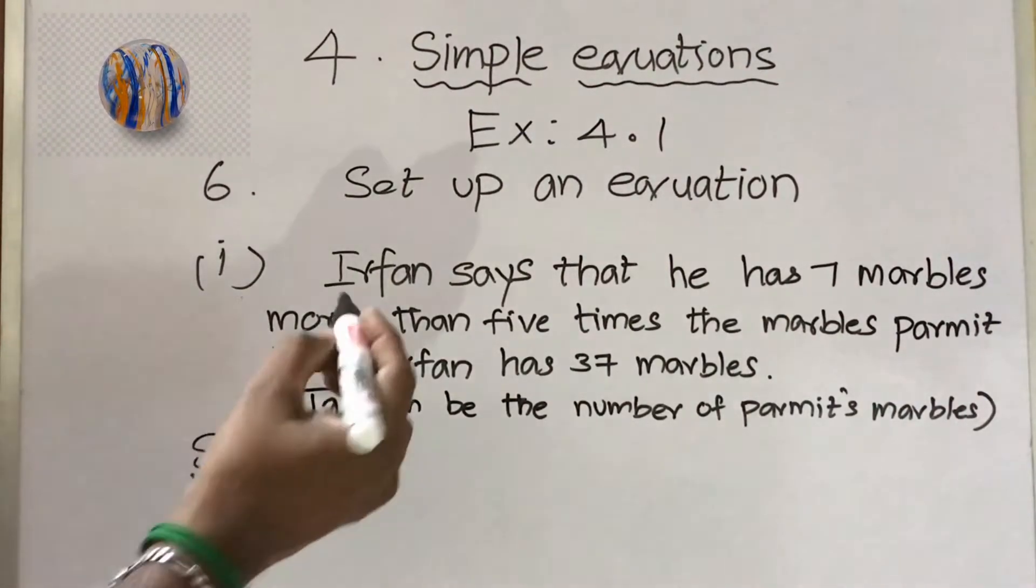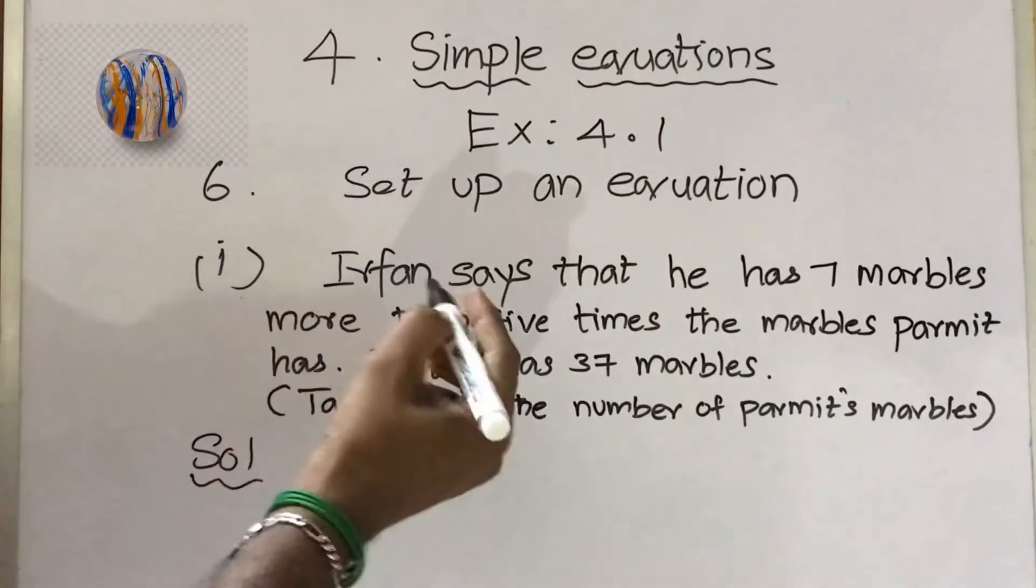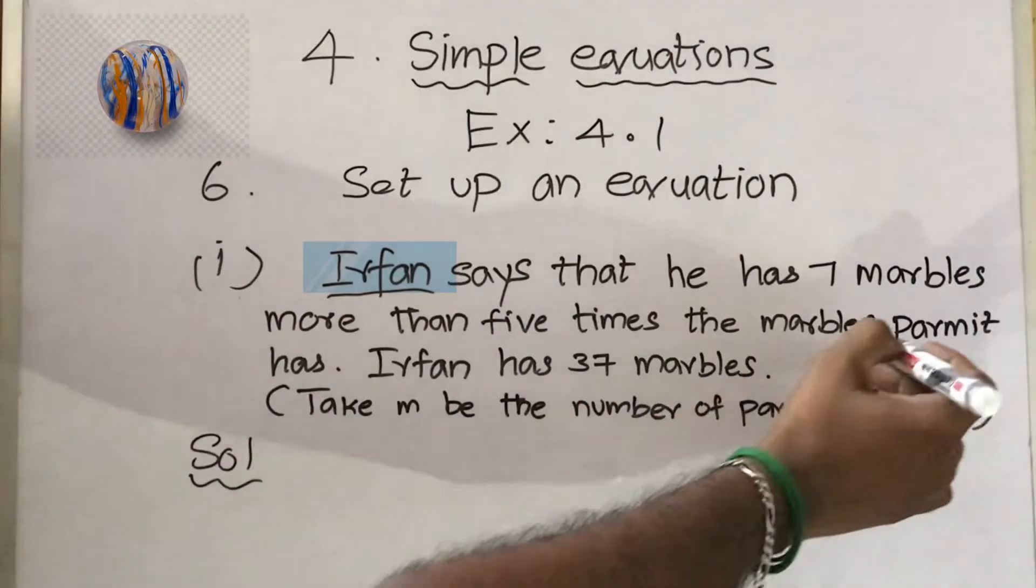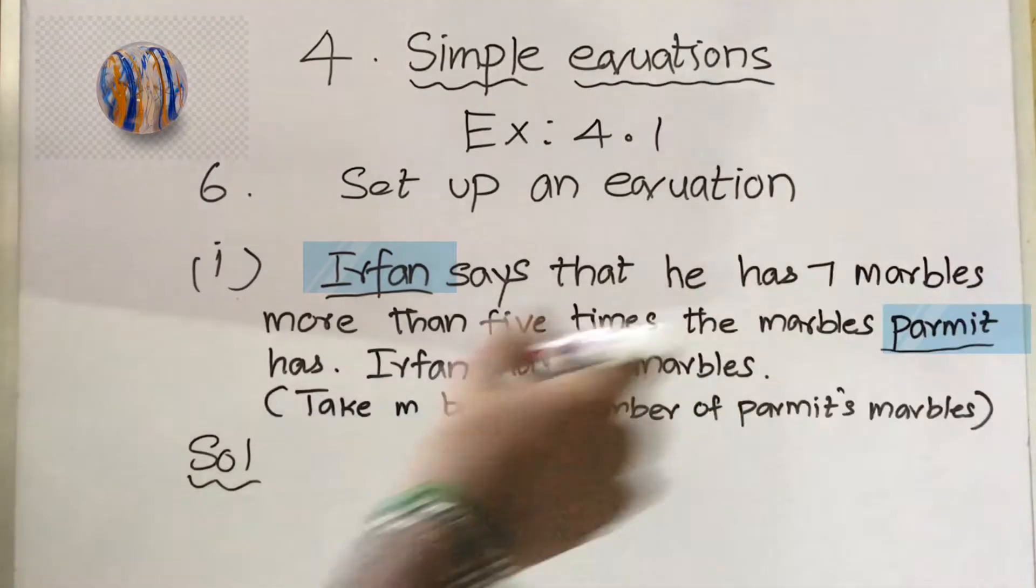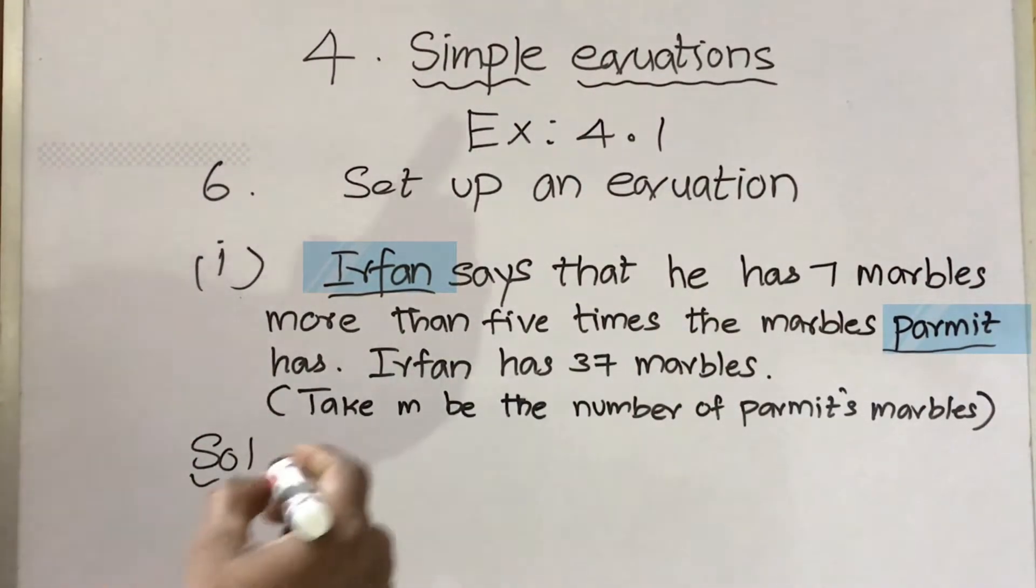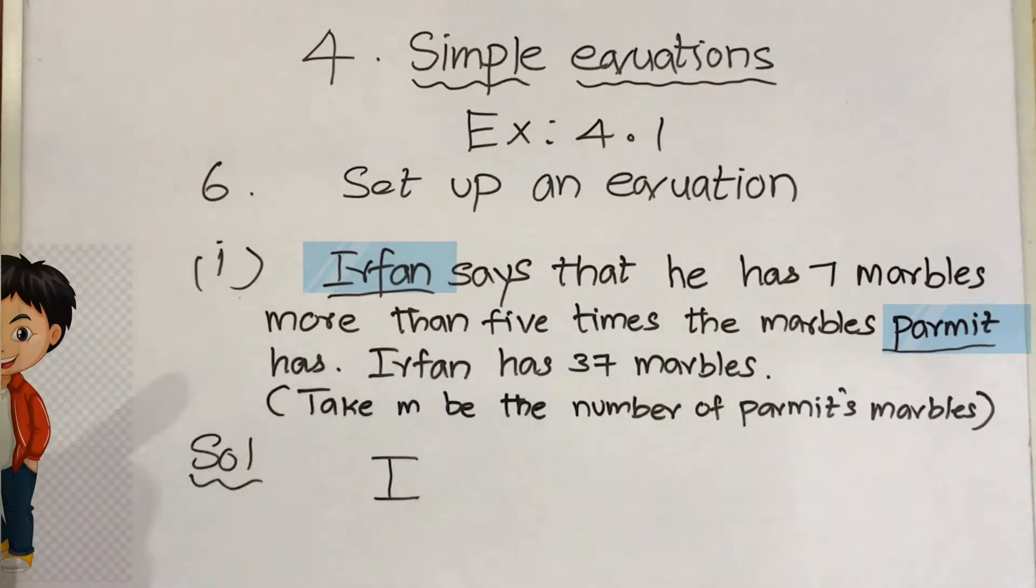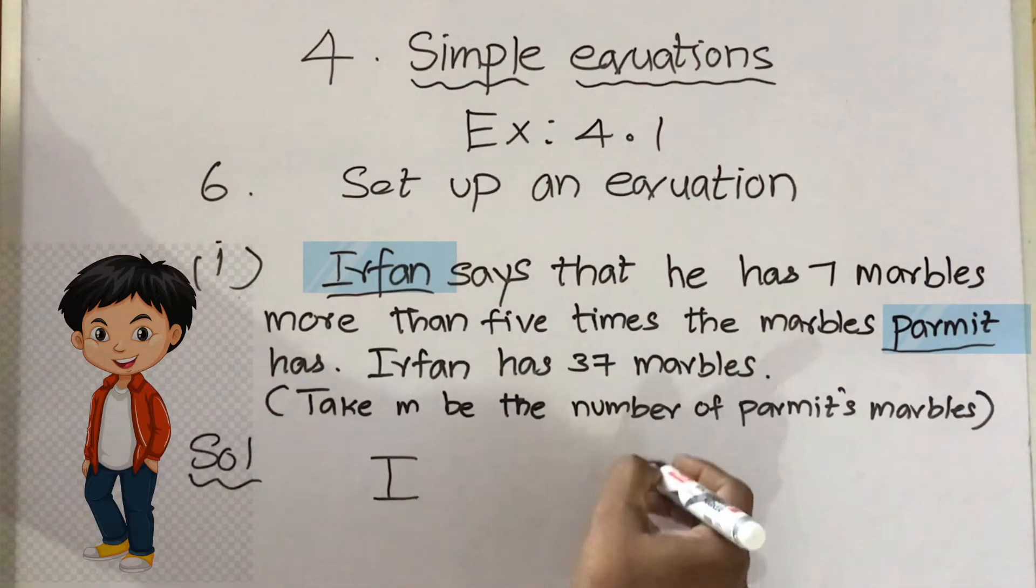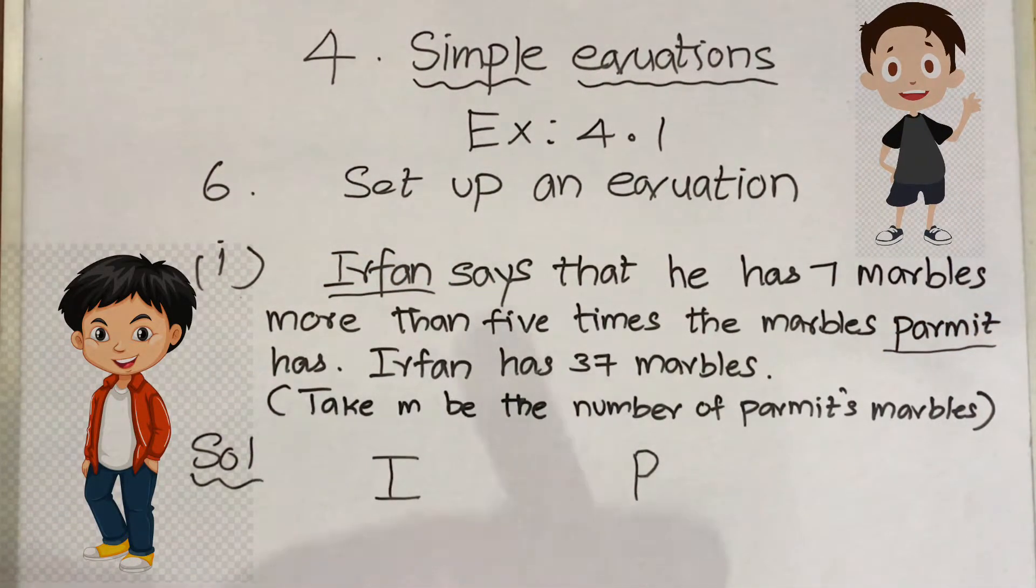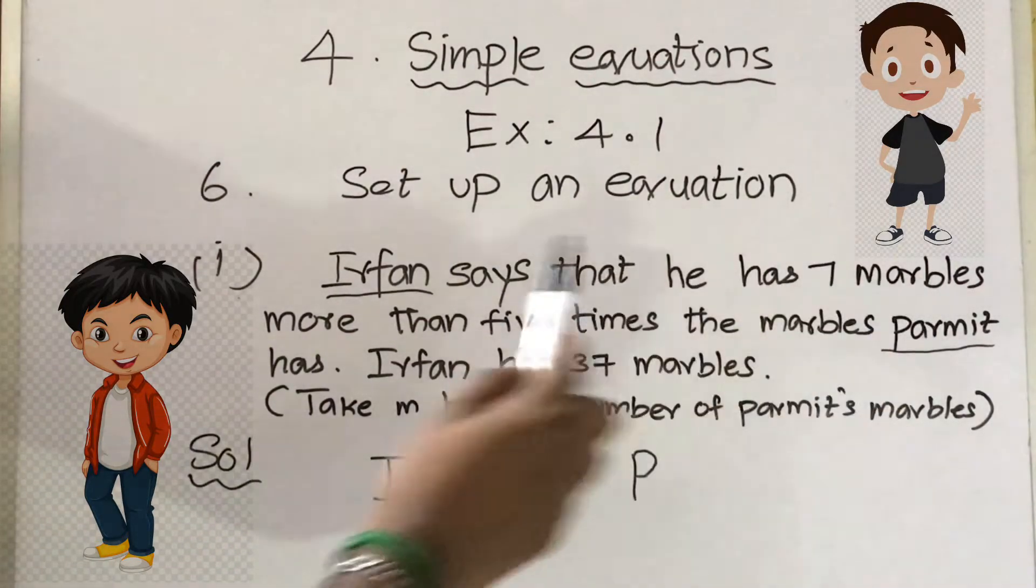First we have to identify who is the important person in this problem: Irfan and Parmit. Taking the first letter alphabet for Irfan I, and for Parmit I am taking P. Now Parmit says that he has seven marbles more than